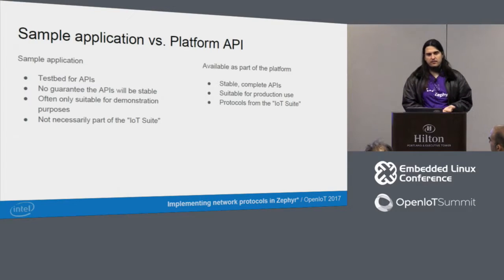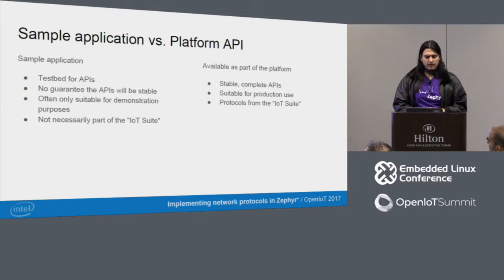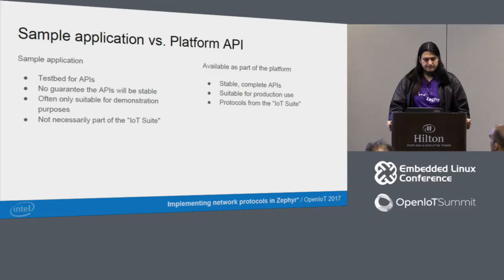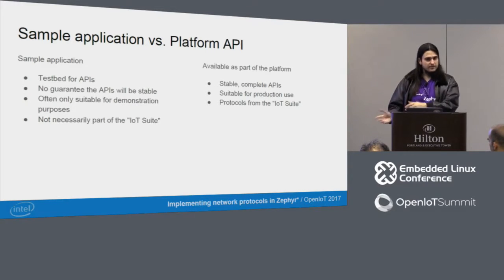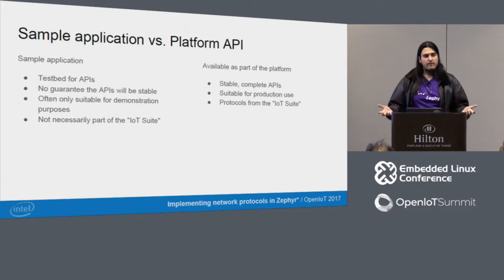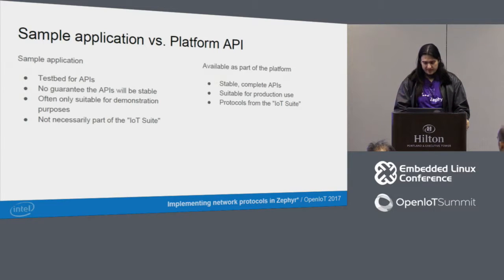There's the distinction between sample applications and platform APIs. Sample applications are seen mostly as a test bed for APIs — there are no API stability guarantees and they're mostly useful for demonstration purposes. They are not part of the IoT suite of protocols. IRC is not one of those things, but MQTT is. On the other hand, APIs available as part of the platform are more stable, more complete, suitable for production use, and mostly protocols that are actually part of the IoT suite.